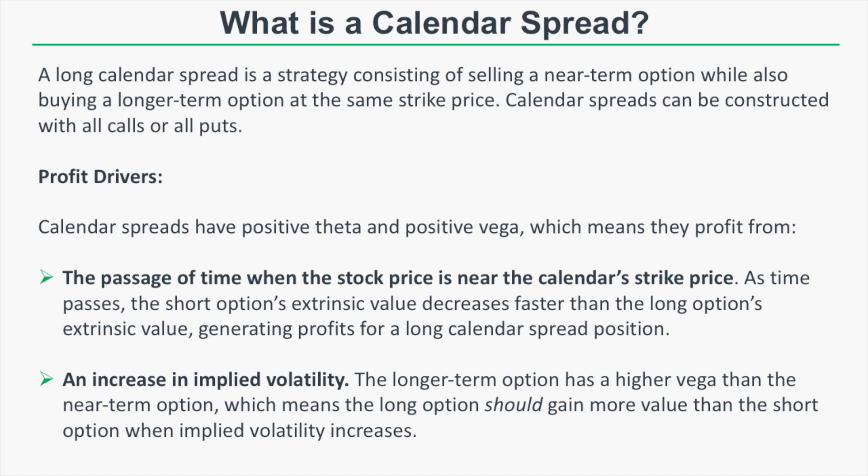A long calendar spread has two primary profit drivers explained by the position's Greeks. Long calendar spreads have positive theta and positive vega. Positive theta means they profit from the passage of time when the stock price is near the calendar's strike price, because the short option's extrinsic value decreases faster than the long option's extrinsic value.